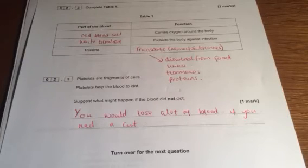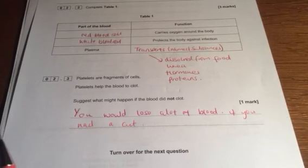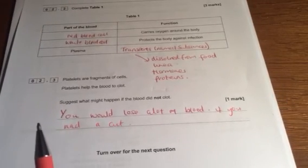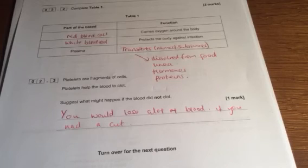So platelets are fragments of cells. Platelets help the blood to clot. Suggest what might happen if your blood did not clot. You would lose a lot of blood. If you have a cut, it needs to be able to clot, doesn't it? Because otherwise you wouldn't get that plug on the top that would stop the blood coming out. Also, you could talk about the idea that bacteria could get into the blood here.